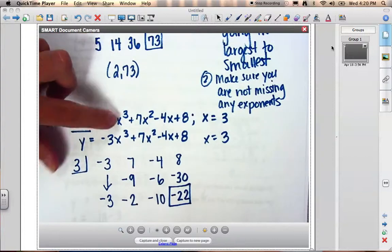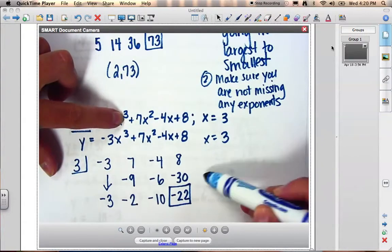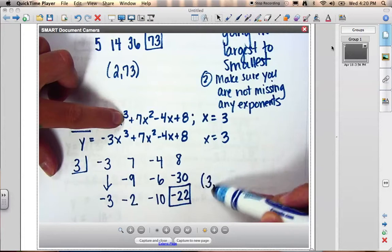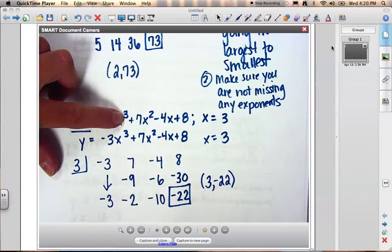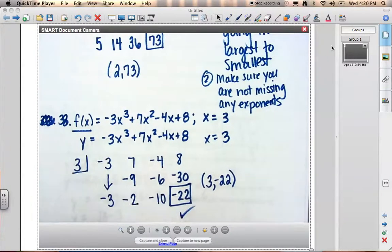And what this is saying is this is a third degree function. If I evaluate at 3, I got negative 22. So 3 negative 22 would be an ordered pair on that function. However, if I'm just asking you to evaluate, the negative 22 would be your answer. I'm going to make you watch one more video. I'm hoping this is making sense. If you have any questions, just email me after the next video.